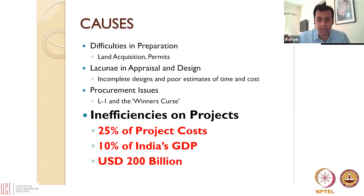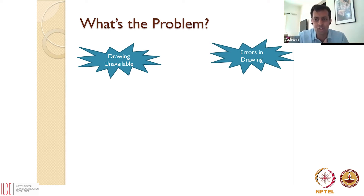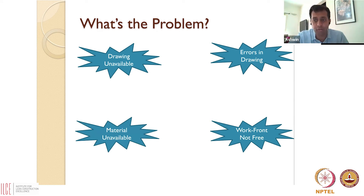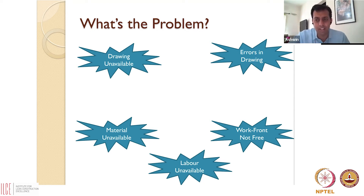Construction projects are delayed, and not all the reasons are related to what happens during construction. But construction certainly is inefficient and can be improved. What happens on site? In many cases, people are ready to work but the drawing has not reached the construction site yet. Or the drawing has arrived but there are issues between the drawing and the ground realities on site. Or the drawings are there but the material has not come to site. The drawings and material are there, but the work front is not free — somebody else is working and you're having to wait. Or you have everything but labor is unavailable — you don't have the right quality of labor with the right qualification on site. These are the kinds of challenges that lead to delays and cost overruns.